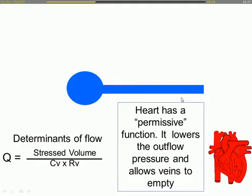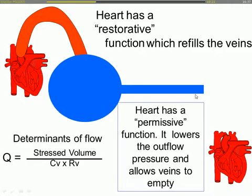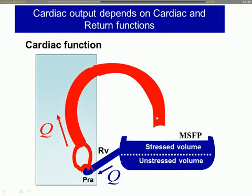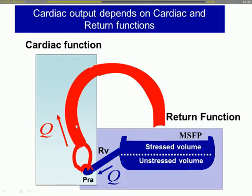The heart has a very important second role — what I call a restorative function. It has to put the volume back: allowing it to come back and putting it back. But it can never put out more than what the recoil force from that balloon provides, because that's where the bulk of the volume is. It can add a very small amount from the lungs, but that's a minor factor. In this simple model, a stressed volume comes out, an unstressed volume comes back to the heart, and the heart pumps it out. The actual cardiac output is determined by the cardiac function — Starling's Law — and this return function, well described by Arthur Guyton in the 1950s and 60s.